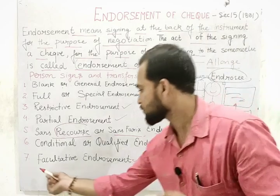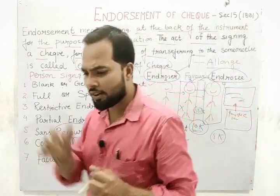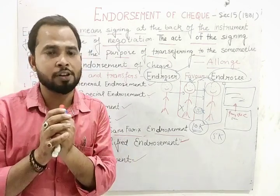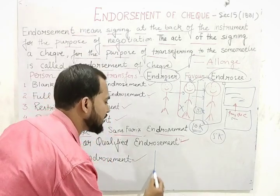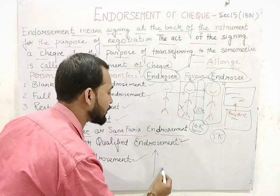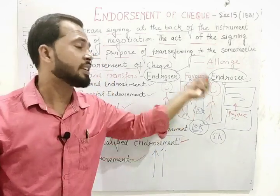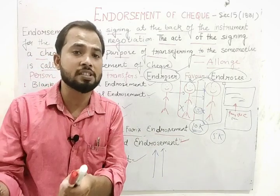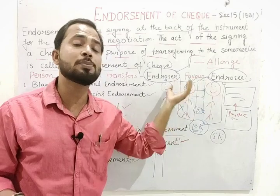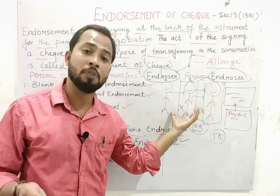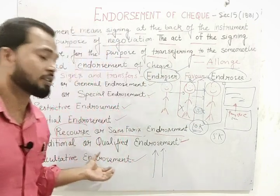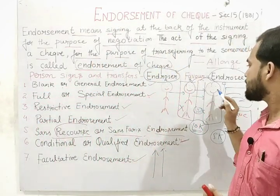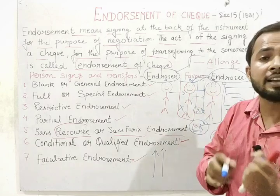The seventh and last type is faculty endorsement. In this case, the endorser increases his liability. It means that even without notice — if the check bounces and Mr. C has not given notice to Mr. B — B will still be responsible. This is opposite to sans recourse. In faculty endorsement, even without notice, the endorser will be held responsible.